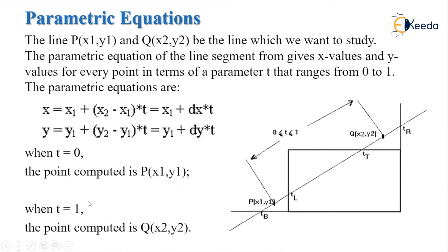T varies between 0 and 1, where 0 is t_min and 1 is t_max. When t equals 0, the point computed is the P endpoint. When t equals 1, the point computed is Q, having coordinates x2 and y2. TL and TR represent the left boundary and the right boundary respectively. In this way we use the parametric equation.